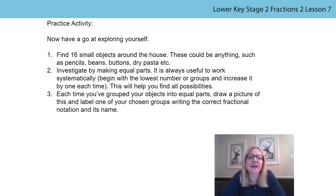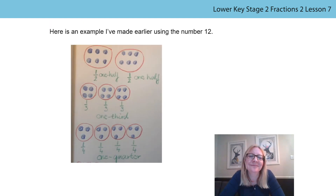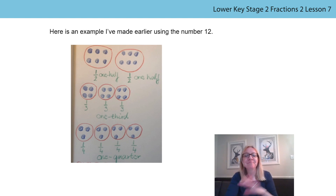And here's your practice activity. Find sixteen objects around your house — this could be anything such as pencils, beans, buttons or dry pasta. Investigate by making equal parts, trying to be as systematic as you can. Each time you've grouped your objects, draw a picture and label one of your groups with the correct fractional notation and its name. Here's an example I made earlier using the number twelve. I wonder how many different fractions you can find using your sixteen items. Have fun! Bye!